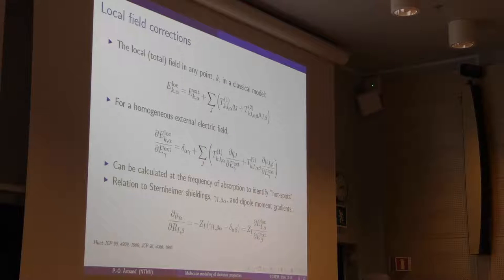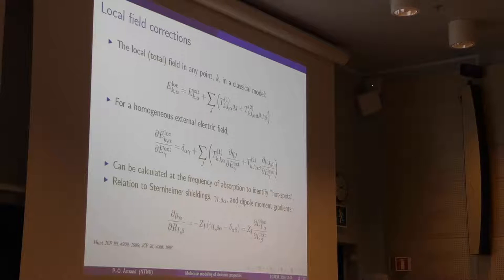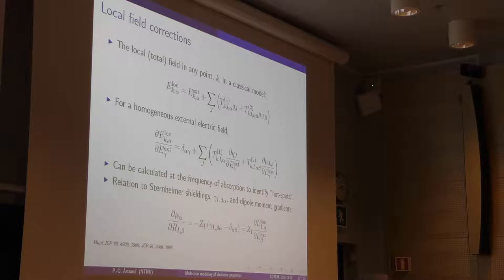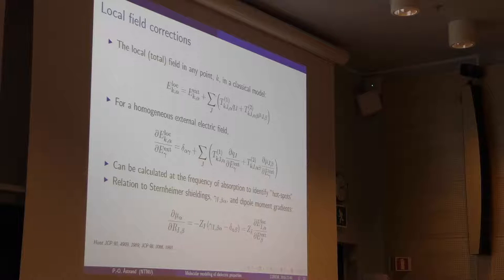The next step was to look at local field corrections. We are interested in that, particularly in the electrical insulation project. If you apply a field to a system, that doesn't mean that's the field the molecule in the liquid experiences — the local field will be different. The local field at a point K is the applied field plus the field from all the charges and dipole moments. We compute what's called a local field factor: the derivative of the local field with respect to the applied field. If it's 10, it means the local field is 10 times larger than the applied field.